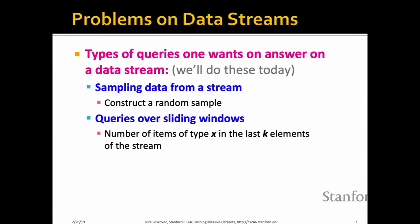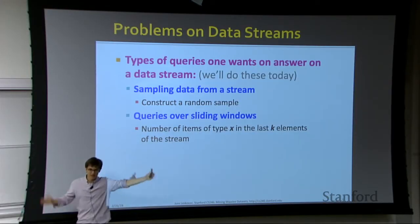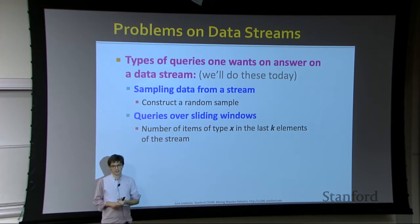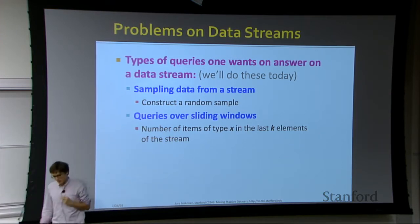Today I want to cover two types of queries. First, sampling from a data stream — constructing a random sample of a stream. Second, answering queries over sliding windows: how many items of type X have occurred in the last k elements of the stream? If you have lots of storage, this is easy — just save the last k elements and loop. But we don't want to do that.